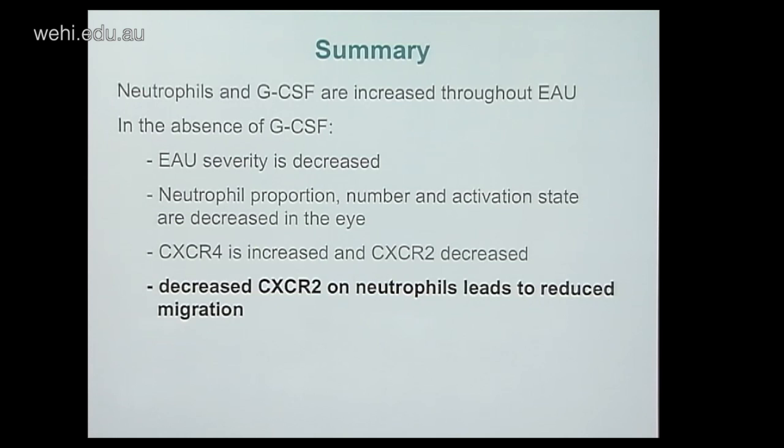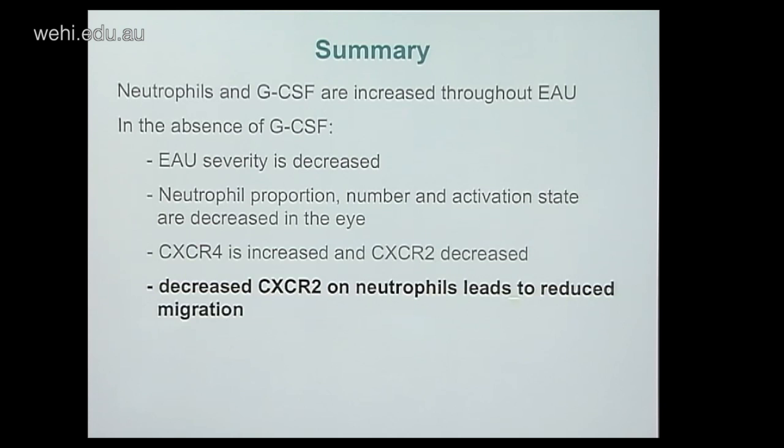In summary of this section: decreased CXCR2 expression on neutrophils leads to reduced migration both in vitro and in vivo.